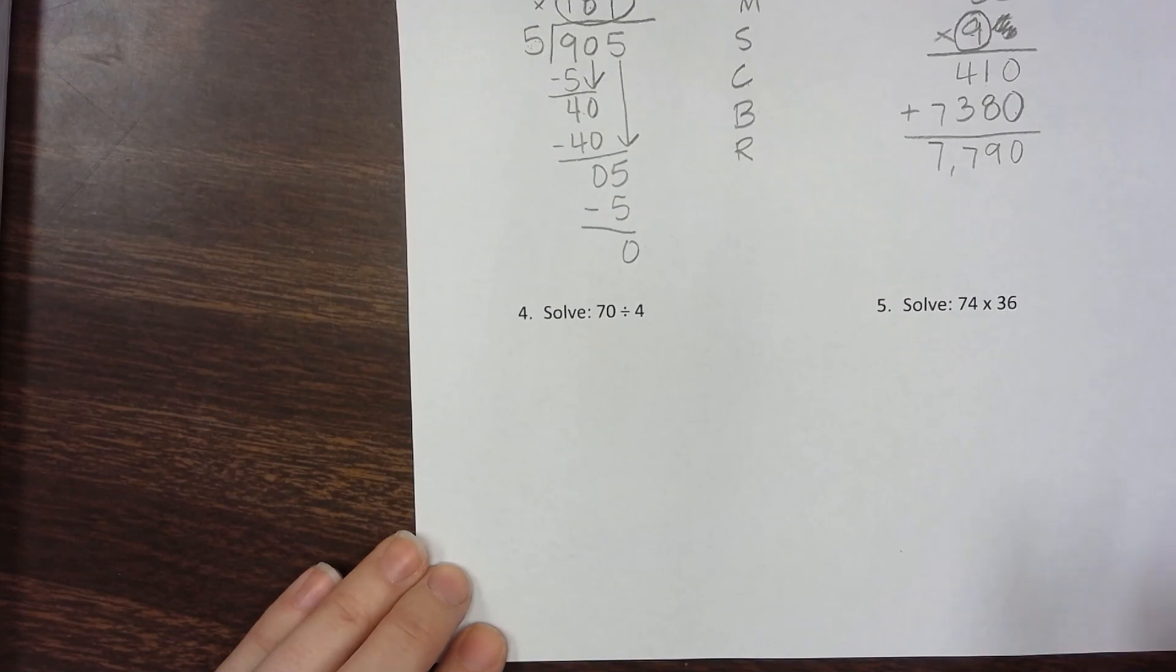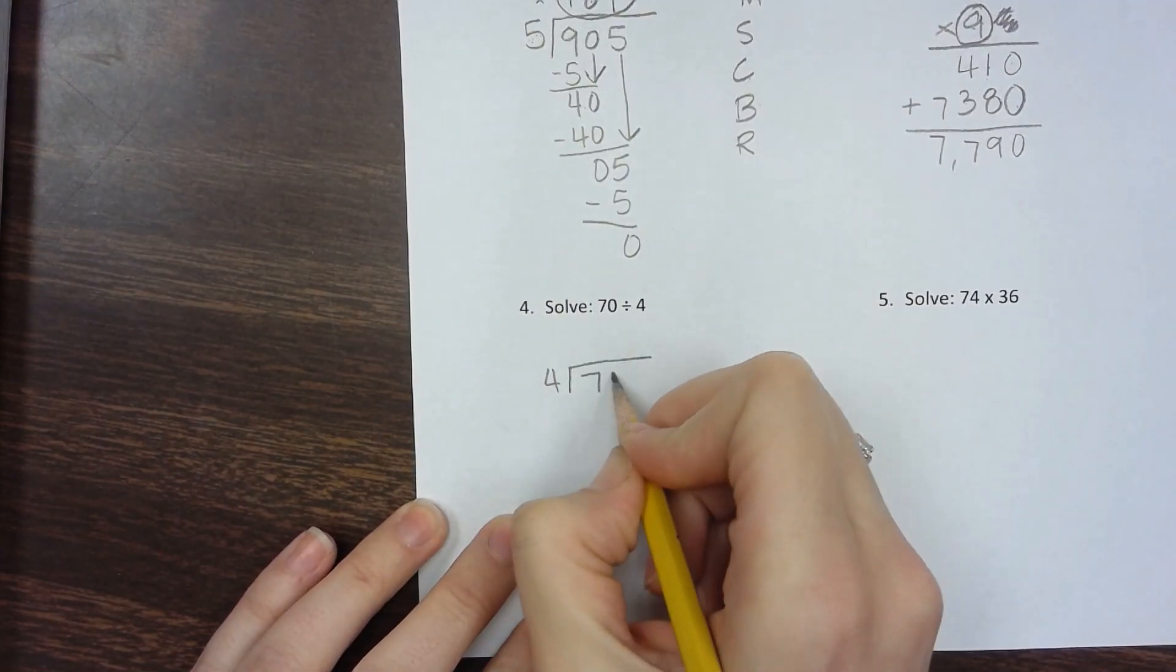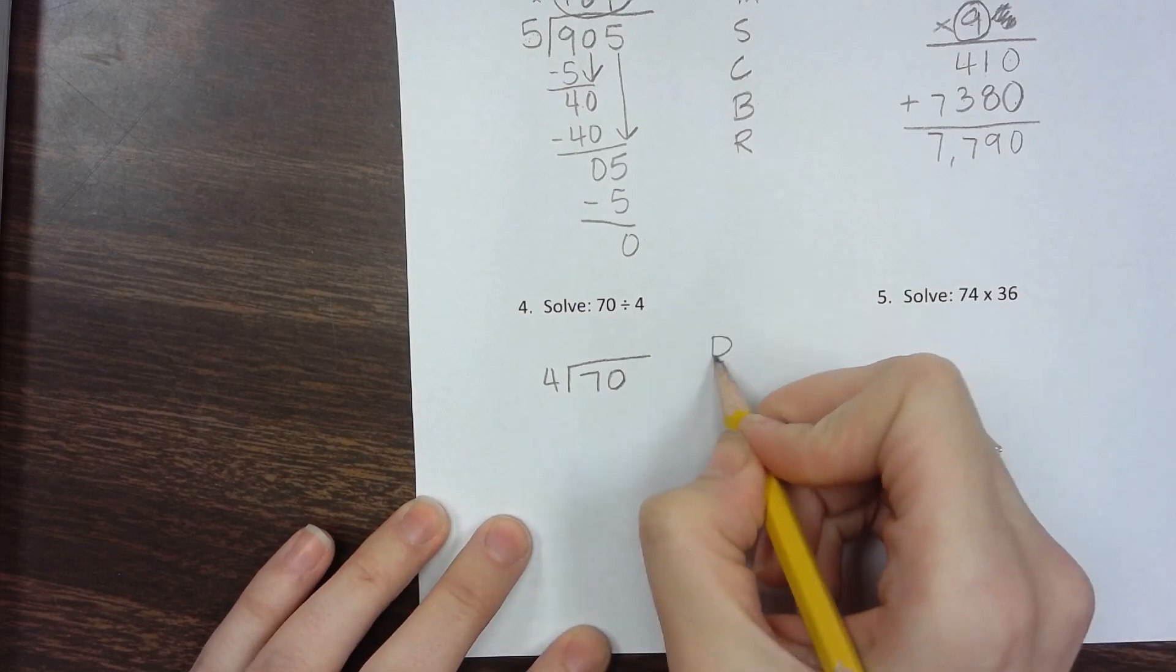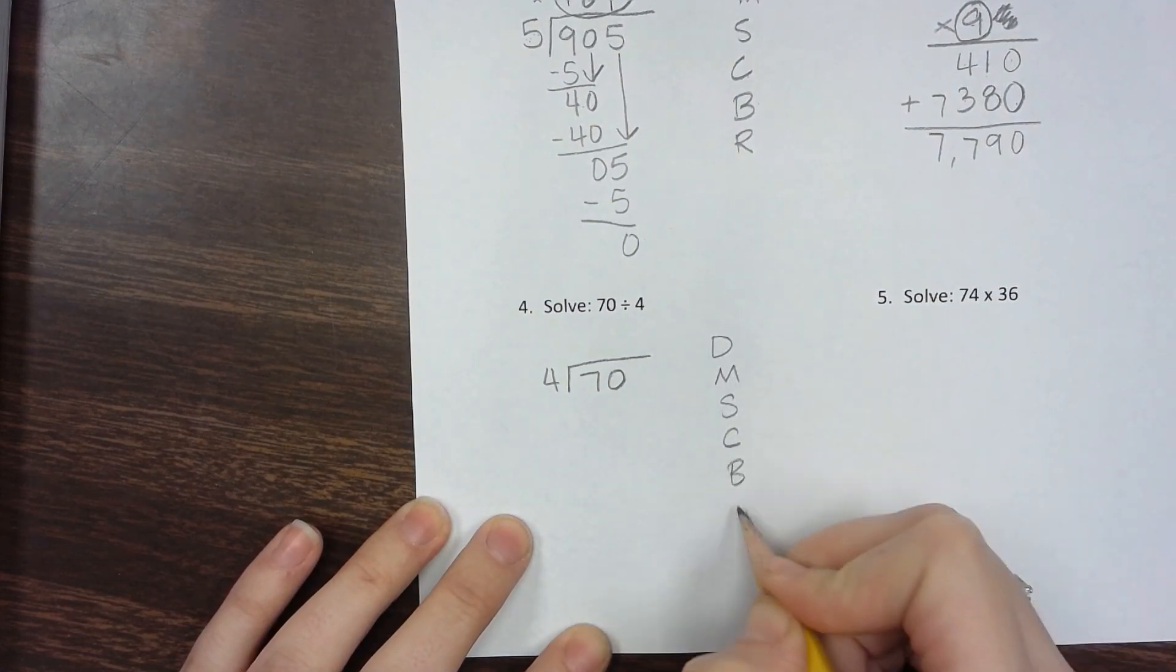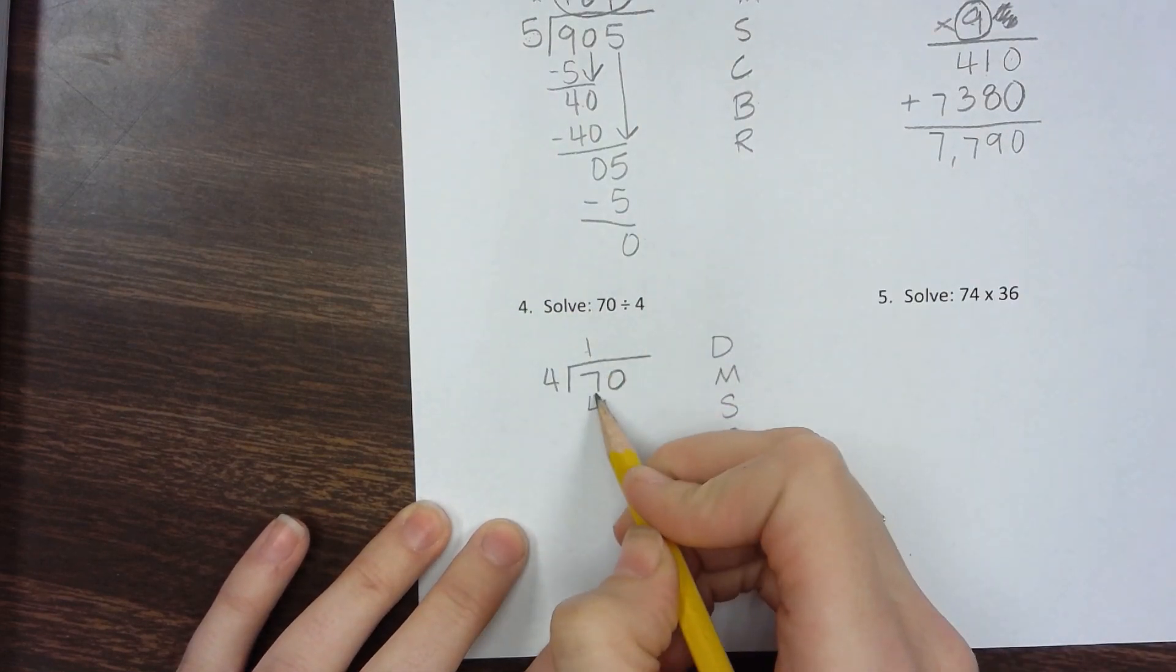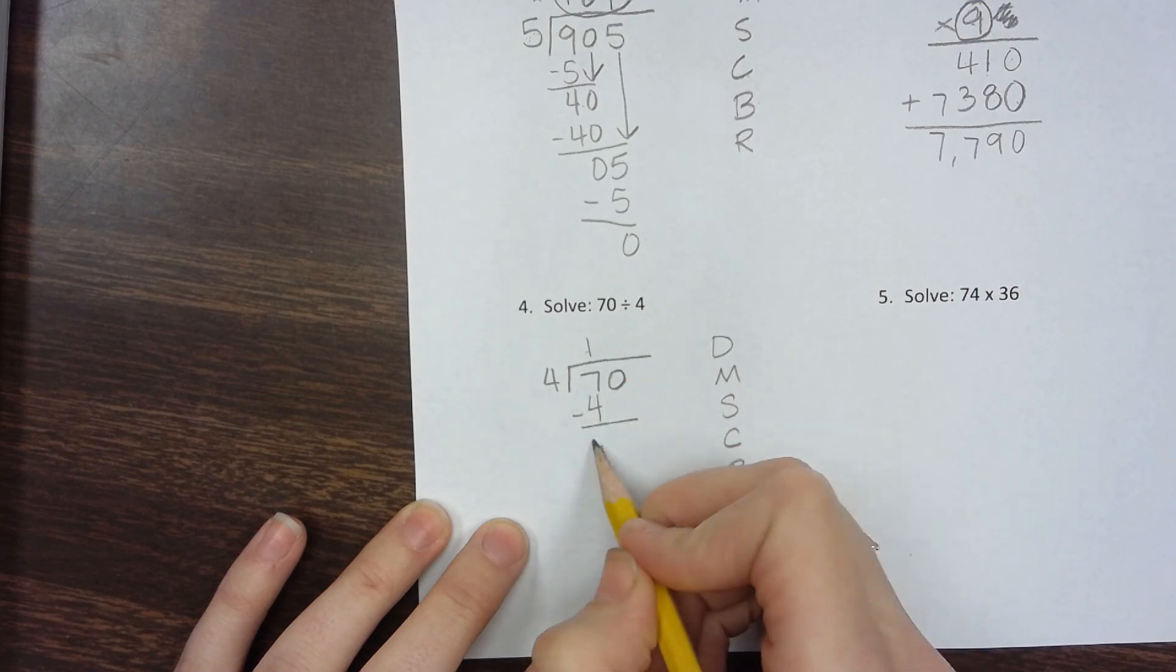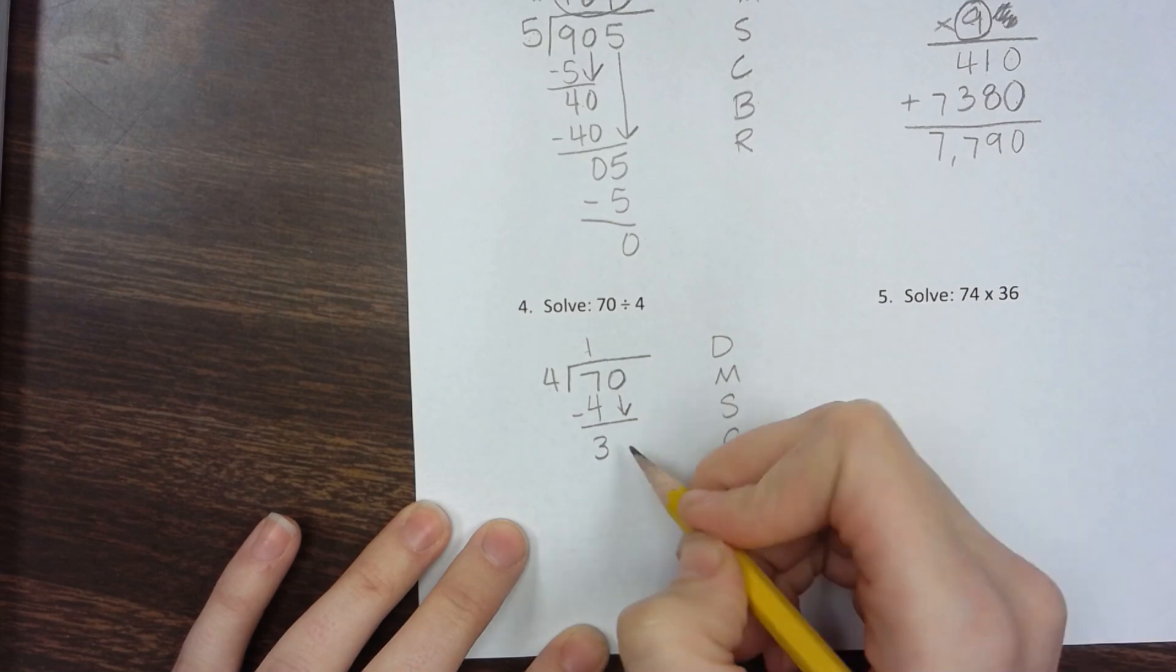Number four is 70 divided by 4. How many times does 4 go into 7? Once. 1 times 4 is 4. Subtract and get 3. Check that 3 is smaller than 4, which it is. Bring down the 0.